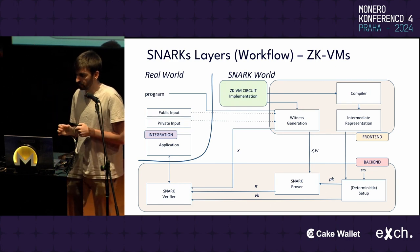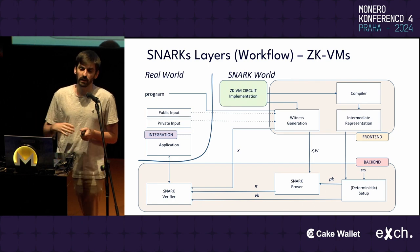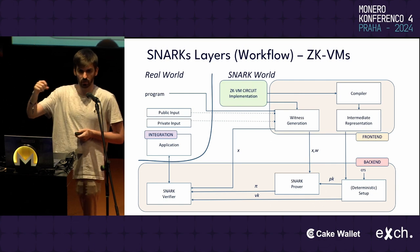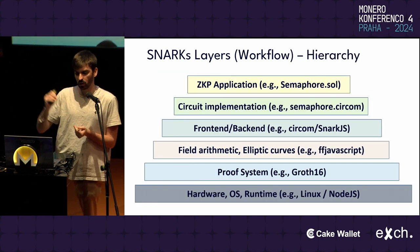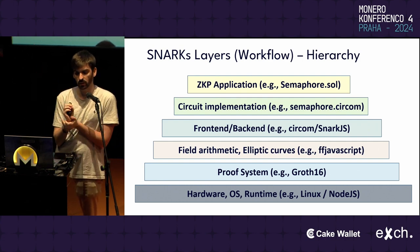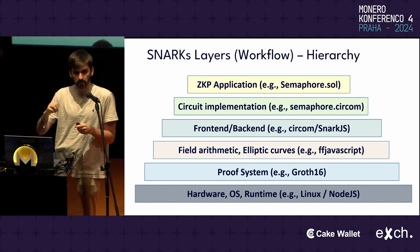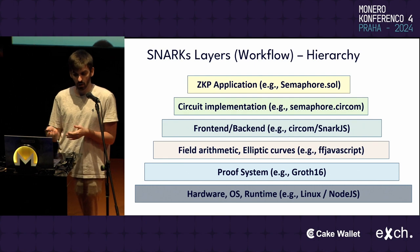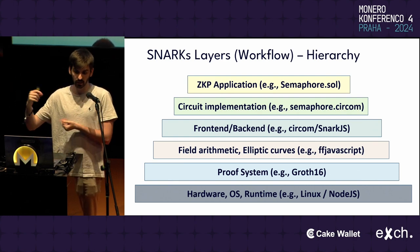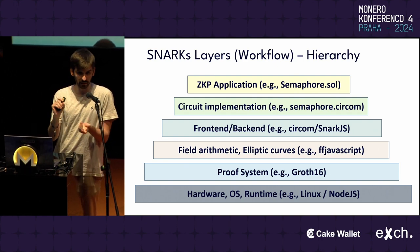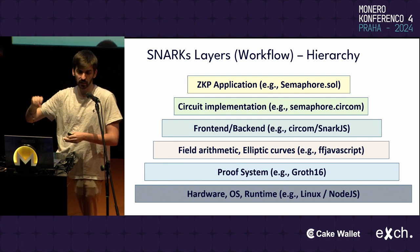Recently, there have been some novel frameworks called ZKVMs that basically abstract away the circuit part — instead of writing ZKP circuits, you can just provide your program to that VM. We can also think about these layers in a hierarchy: at the bottom we have hardware and runtime, then the proof system, then optimized field arithmetic and elliptic curve libraries, then the frontend and backend, the circuit, and the application. Any vulnerability in any of the lower levels means that everything built upon that layer can be broken.